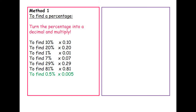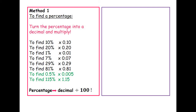For trickier cases: if you wanted to find 0.5%, dividing by 100 gives you 0.005 as your multiplier. And for percentages greater than 100, as usual divide by 100 — for example, 115% would give a multiplier of 1.15. Remembering to just divide by 100 means you can work out any percentage as a decimal.